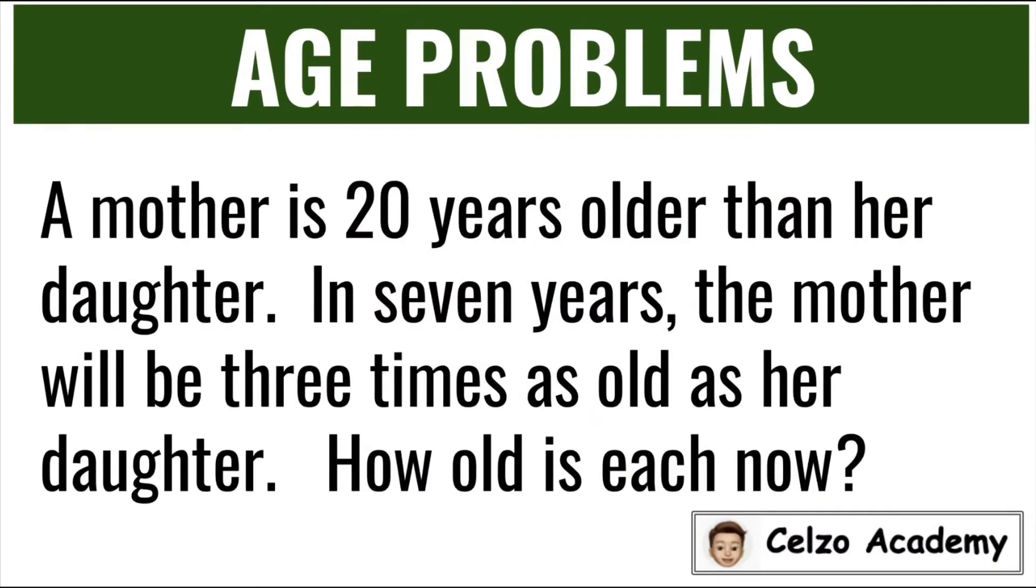Today we will learn how to solve age problems the simplest way. A mother is 20 years older than her daughter. In 7 years, the mother will be 3 times as old as her daughter. How old is each now?